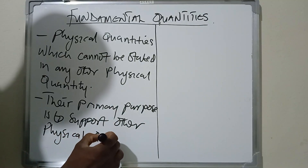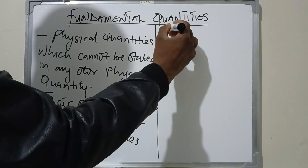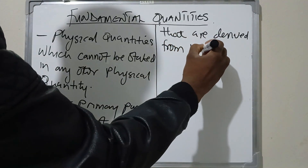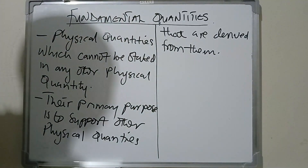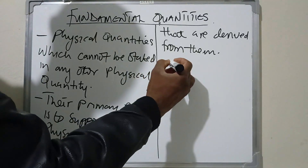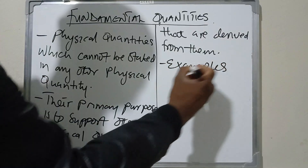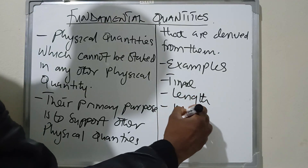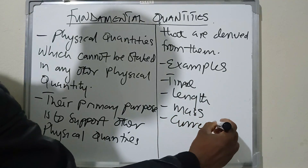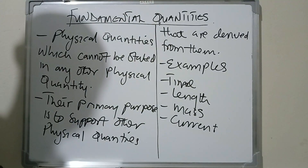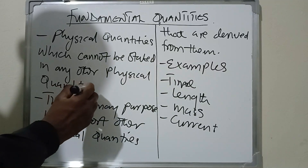Their primary purpose is to support other physical quantities that are derived from them. There are quantities that are derived from fundamental quantities, and these quantities are not themselves fundamental quantities. So the definition is: these are quantities which cannot be stated in any other physical quantity.